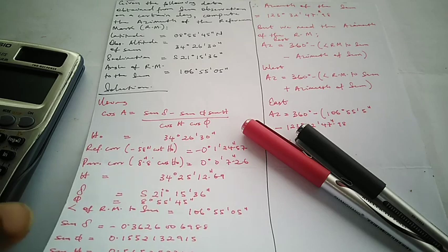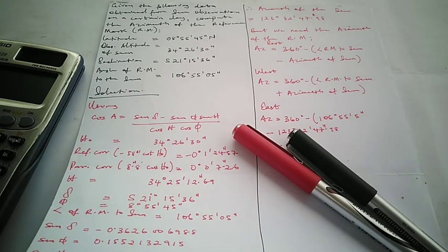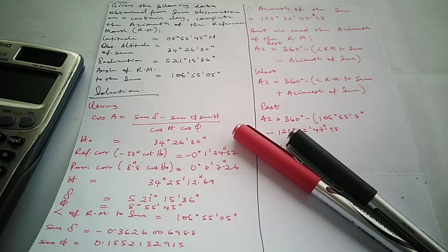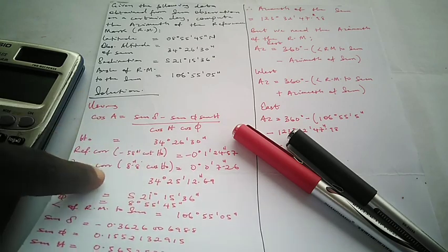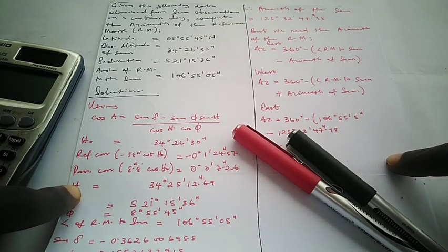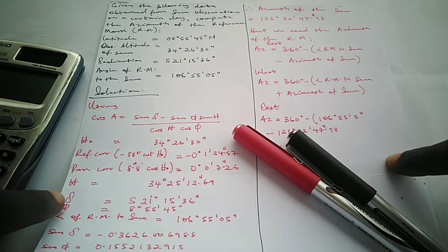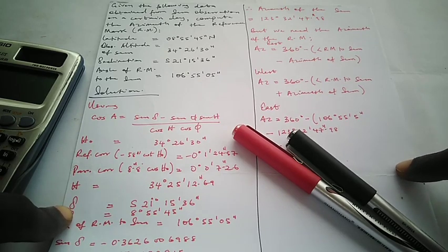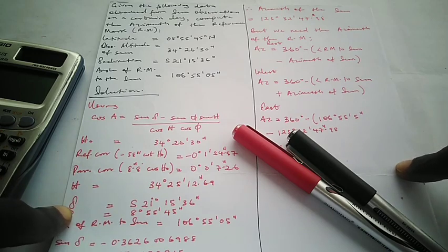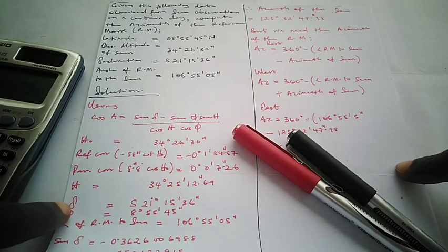We are going to look at this particular question. Given the following data obtained from sun observation on a certain day, compute the azimuth of the reference mark. The parameters given are: latitude of the place of observation — 8° 55' 45"; observed altitude — 34° 26' 30"; declination — South 21° 15' 36"; and angle of the reference mark to the sun — 106° 55' 05".